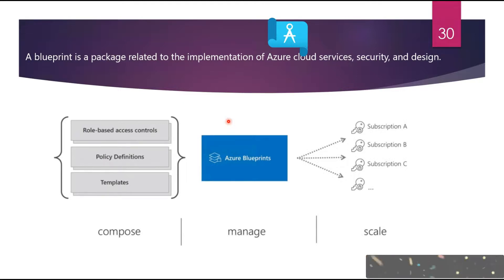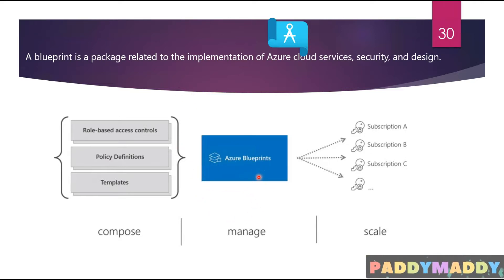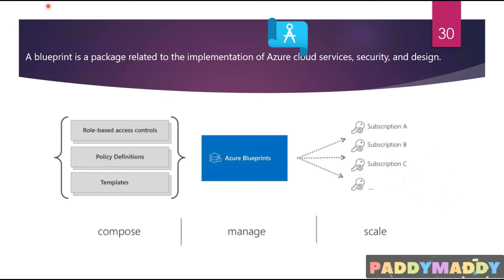A policy can be included as one of many artifacts in a blueprint definition. Including a policy in a blueprint enables the creation of the right pattern and design during the assignment of a blueprint. The policy inclusion makes sure that only approved or expected changes can be made to the environment, protecting ongoing compliance with the intent of the blueprint. That's where blueprints and policy stand in different places — that is the major difference. I hope this is useful. Thank you for watching; we will continue with knowledge checks in the next section.